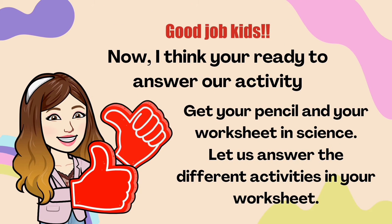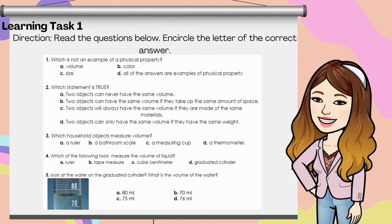Good job, kids! Now I think you're ready to answer our activity. Get your pencil and your worksheet in science. For learning task 1, read the question below and circle the letter of the correct answer. Number one: which is an example of a physical property? Is it A, volume? B, color? C, size? Or D, all of the answers are examples of physical property?